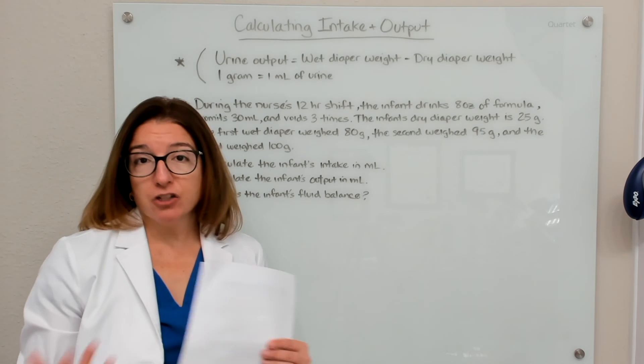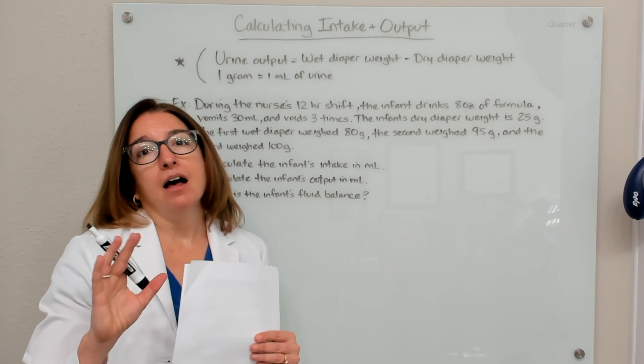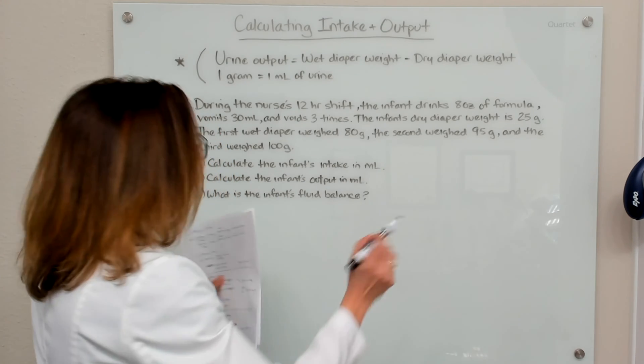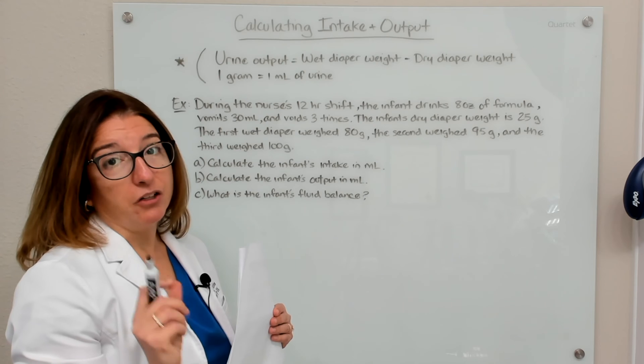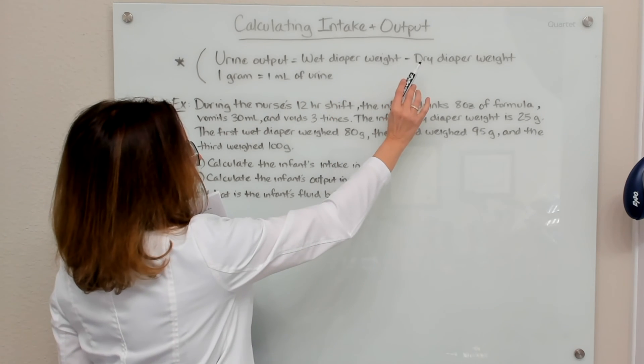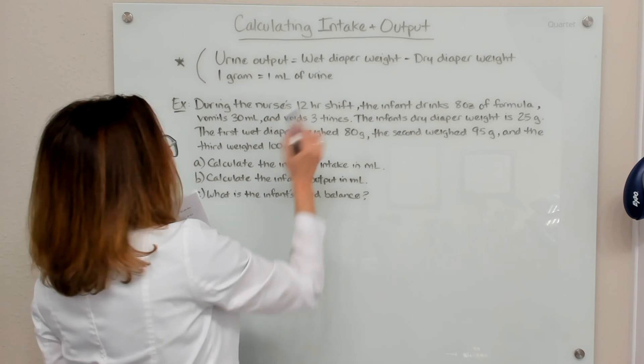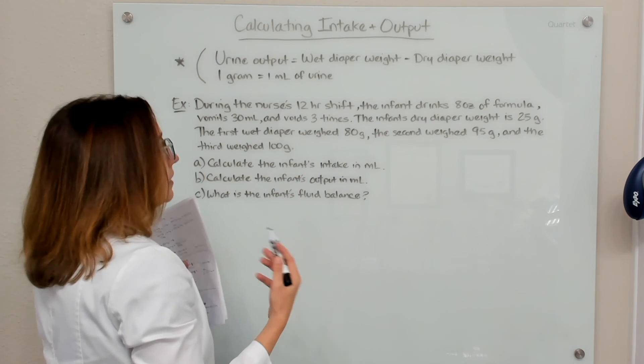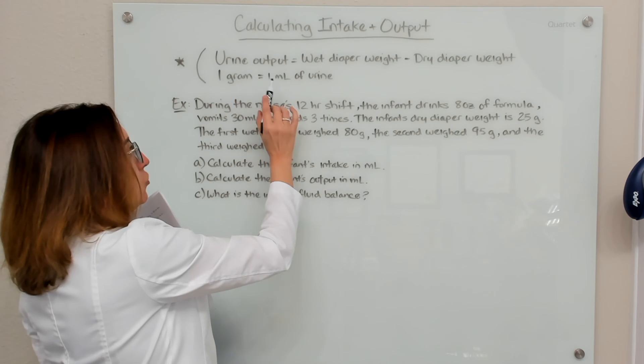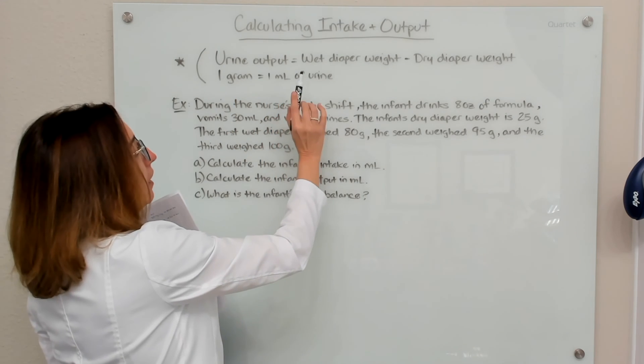With the pediatric population, however, infants and small children may be wearing diapers. So in order to calculate their urine output, we would take the wet diaper weight and subtract out the dry diaper weight, and that would give us the grams of urine output. And one gram is equal to one milliliter of urine output.